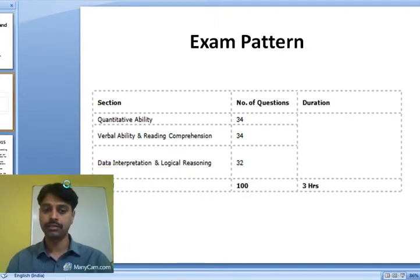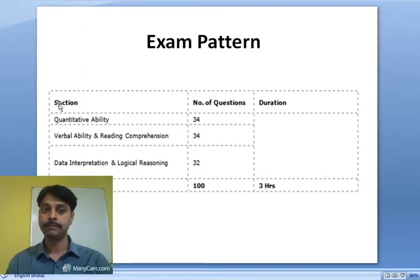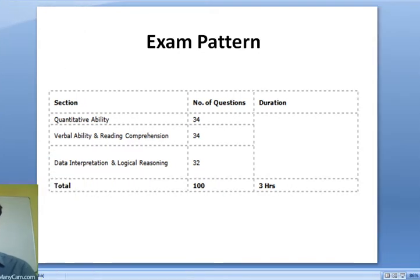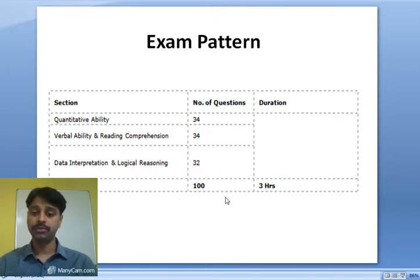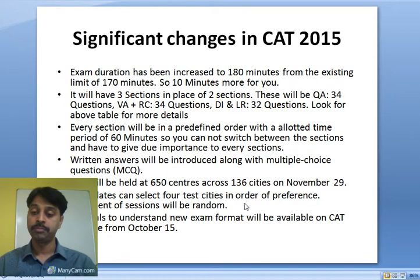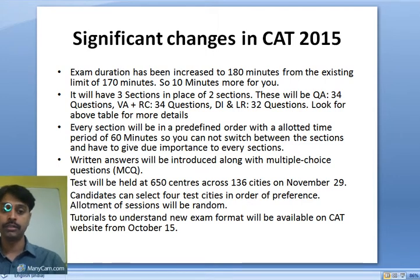Here is the syllabus. First of all you can see the exam pattern: Quantitative — 34, Verbal Ability and Reading Comprehension — 34, and Data Interpretation and Logical Reasoning — 32. The number of sections got increased and the number of questions also got changed.